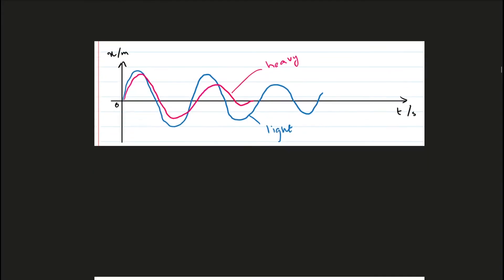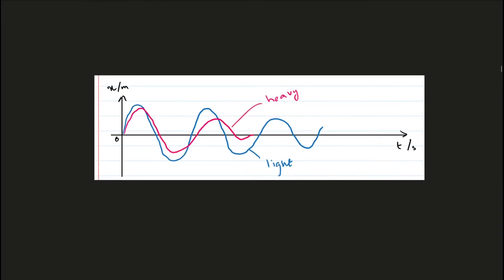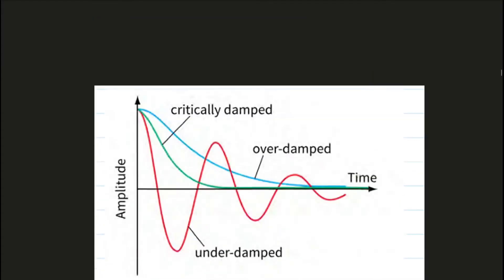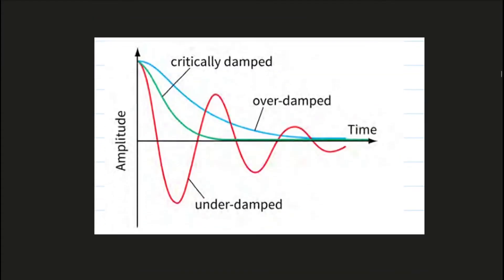This graph shows what the displacement-time graph will look like if damping occurs in a simple harmonic motion system. This graph compares two types of damping: the blue graph represents light damping where the decrease is much more gradual, whereas in the red graph the displacement decreases much more quickly, which represents heavy damping.